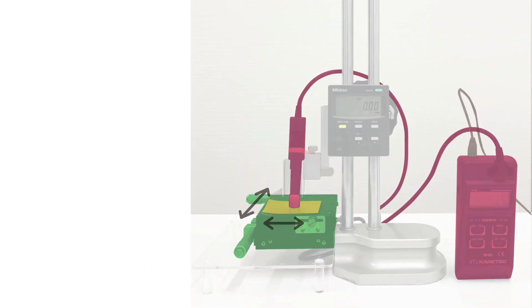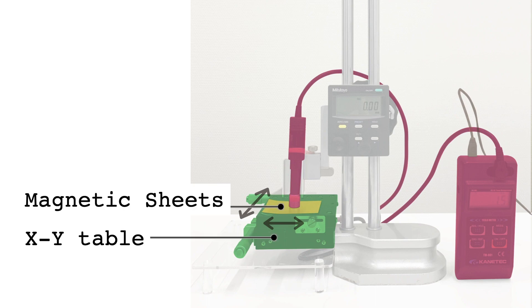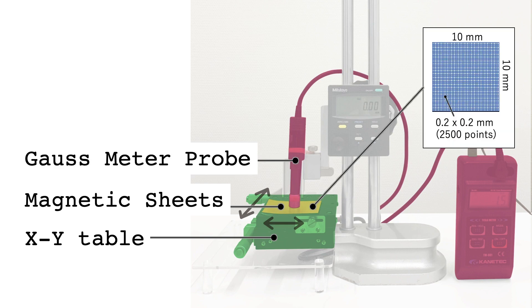Furthermore, we constructed this device to measure the actual magnetic flux density. The stacked magnetic sheets were fixed on the X-Y linear table under the Gauss meter probe. Then, the magnetic flux density was measured in 0.2 mm increments in a 10 mm square area.